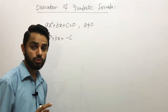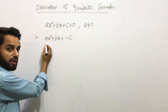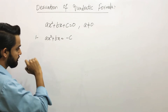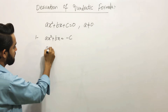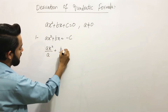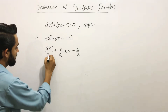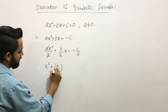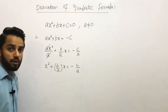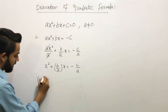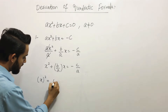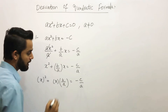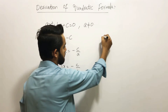We divide the whole equation by a, giving: ax²/a + (b/a)x = −c/a. The a cancels, leaving x² + (b/a)x = −c/a. We can write this as x² + x·(b/a) = −c/a, setting up the completing the square process.